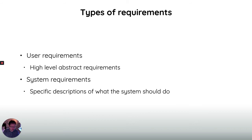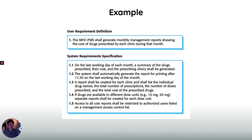Requirements documents usually have two different types of requirements: user requirements, which are high-level abstract requirements for what users want from the system, and system requirements, which are specific descriptions of what the system should actually do. For example, in a medical drug-prescribing system, a user requirement might be: 'The system shall generate monthly management reports showing the cost of drugs prescribed by each clinic during that month.' The system requirement would then break that down in much more detail — on the last working day of each month, a summary of drugs prescribed, their cost, and the prescribing clinics will be generated.